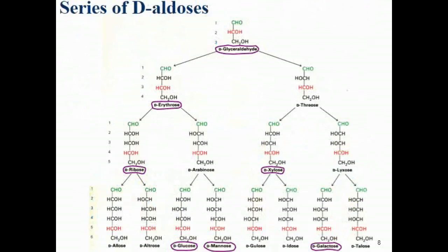The aldohexose family starts from glyceraldehyde (three carbons), then erythrose and threose (four carbons, diastereomers of each other), then the five-carbon pentoses: ribose, arabinose, xylose, and lyxose, and the six-carbon hexoses: allose, altrose, glucose, mannose, gulose, idose, galactose, and talose. All of these are D-aldoses with corresponding L-enantiomers. The ones marked with a circle are the structures you should know.